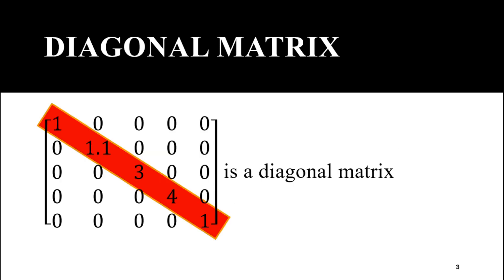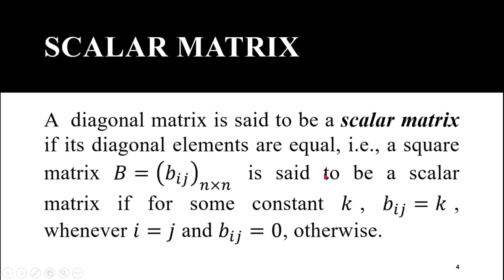This is a matrix having 5 rows and 5 columns, so it is a square matrix. The highlighted elements are the diagonal elements, and all remaining elements are non-diagonal elements. You can observe that all the non-diagonal elements in this square matrix are 0, so it is a diagonal matrix.